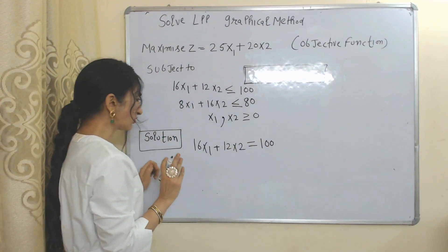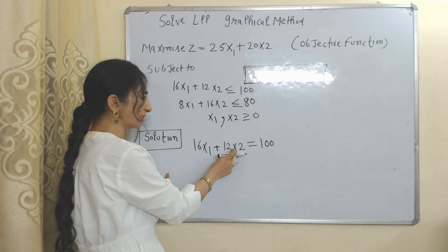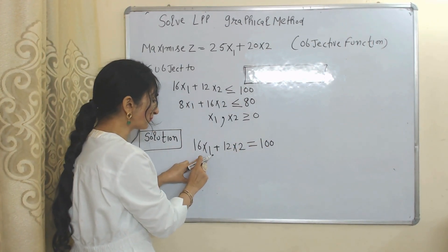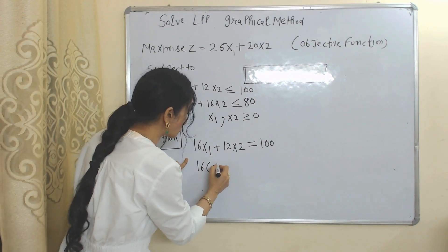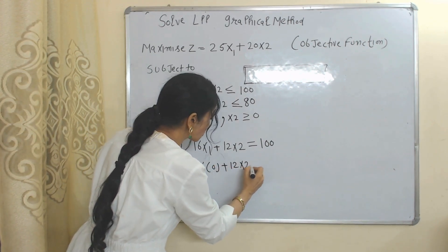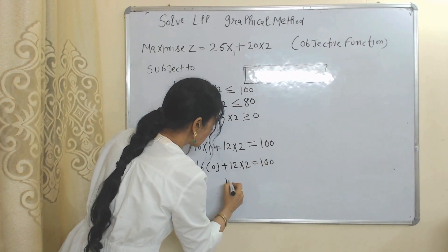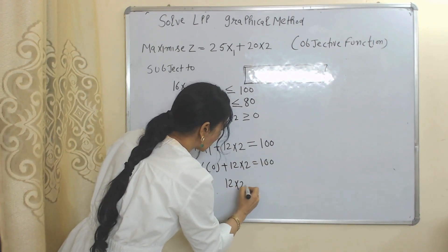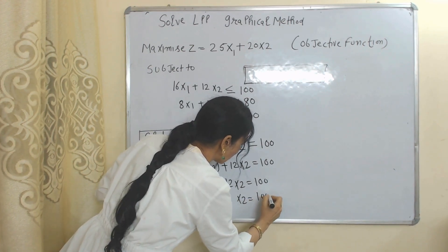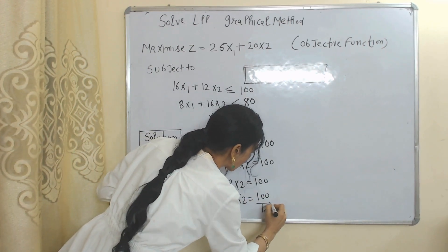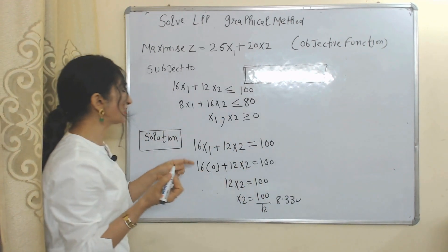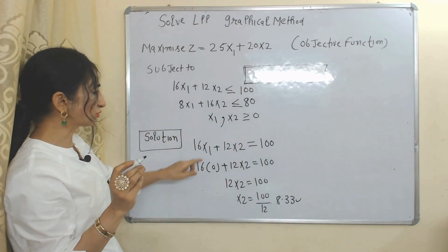For the first constraint, converting to equality: x1 + x2 = 400. To find the value of x2, we put x1 = 0, and the value of x2 becomes equal to 8.33.